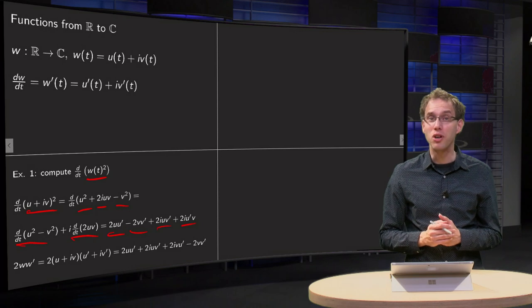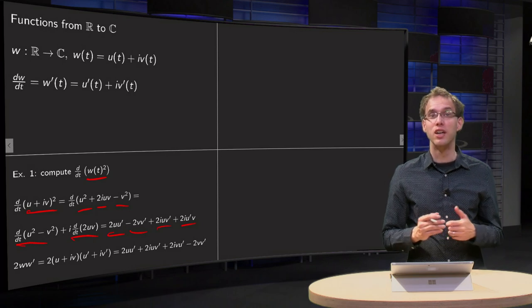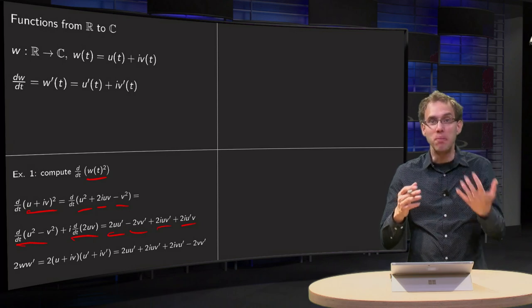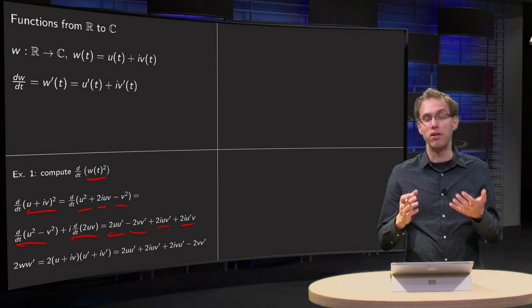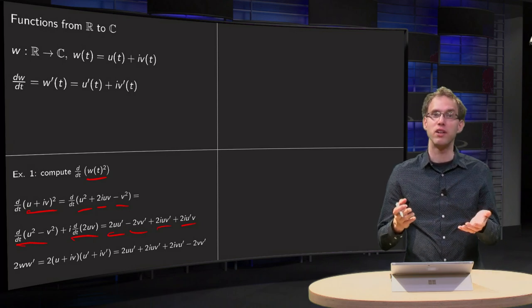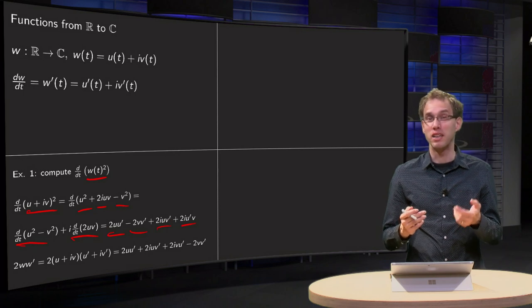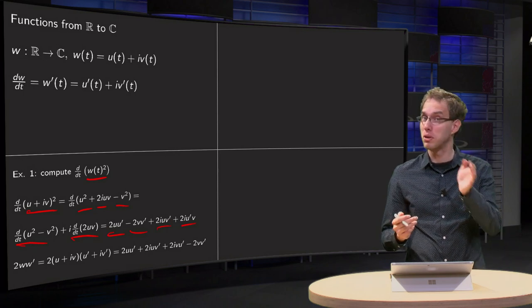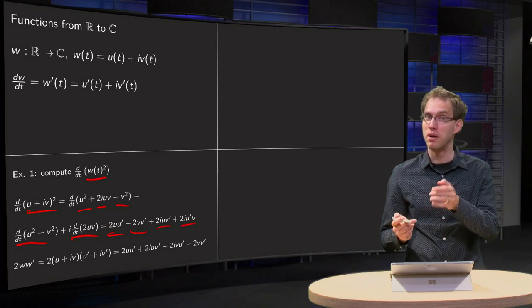And it looks rather strange. You would expect that, well, you have W squared, you differentiate, and you would expect to get 2 times W times W prime.